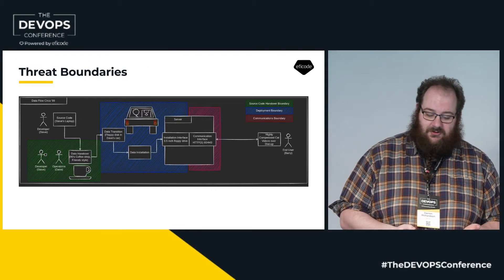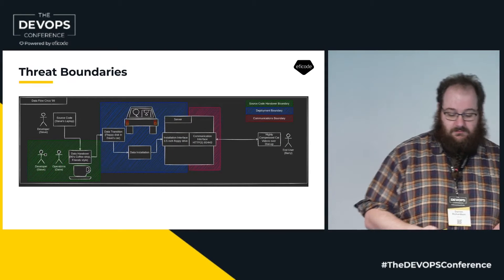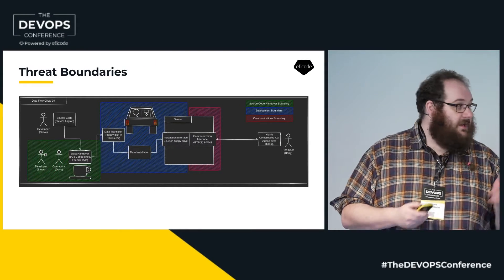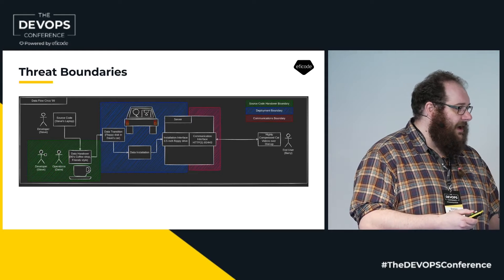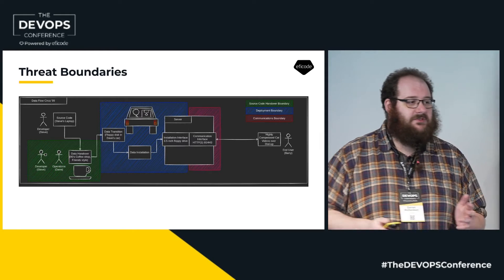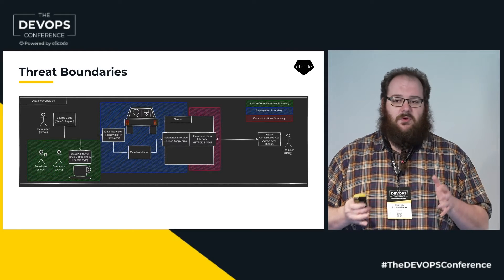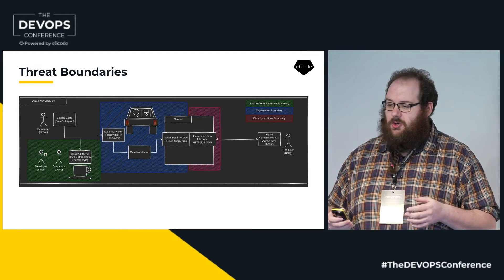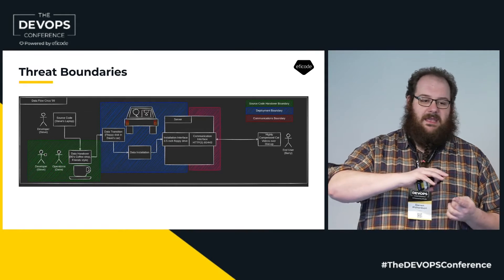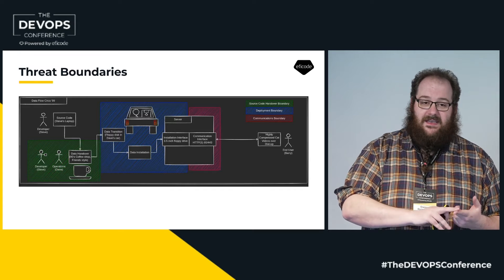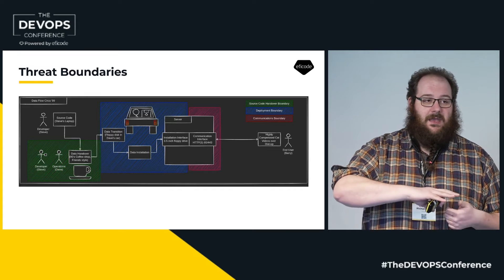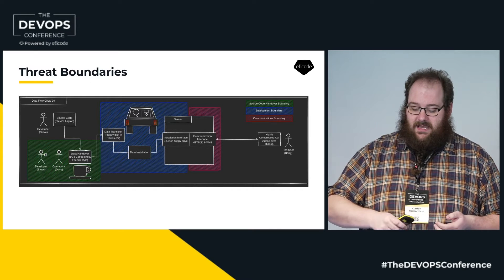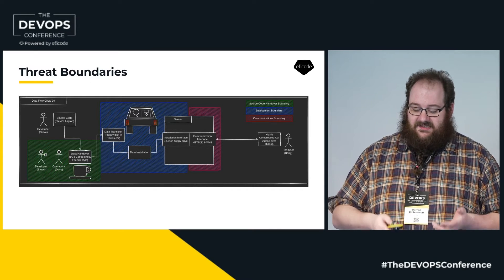And then we have trust boundaries. The trust boundaries are wherever the software moves or changes hands, changes control. And this can be on an interface level, it can be a process level, or it can be on a system level.